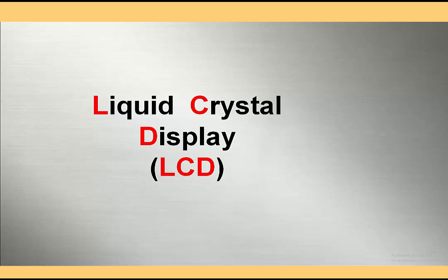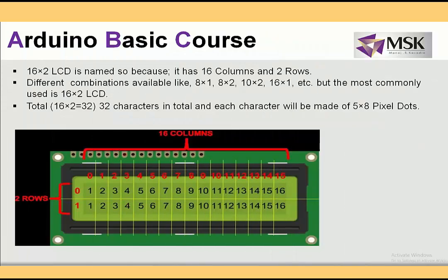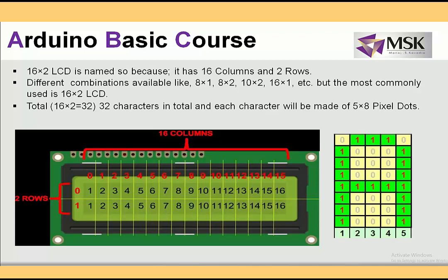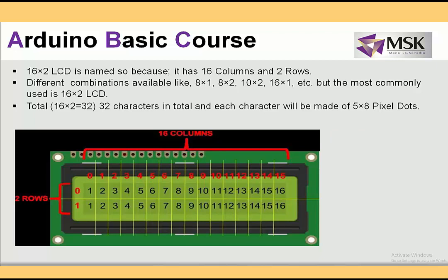Now, what is LCD? Liquid crystal display, as the name says, is a display — so it's an output device that can display information. It displays information in a dot matrix of pixels. That dot may be 5 by 7 or 5 by 8. This LCD has two rows and 16 columns, which is why it's also called 16 by 2.